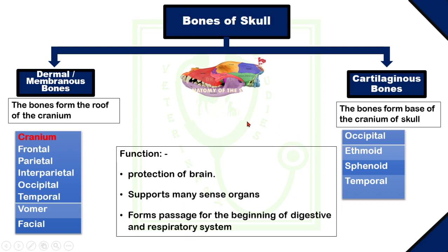Functions of skull: The skull protects the brain or the central nervous system. It also supports and protects the sense organs such as facial and cranial nerves. The skull forms the passage for the beginning of the digestive and respiratory system in the form of the mouth and nose.